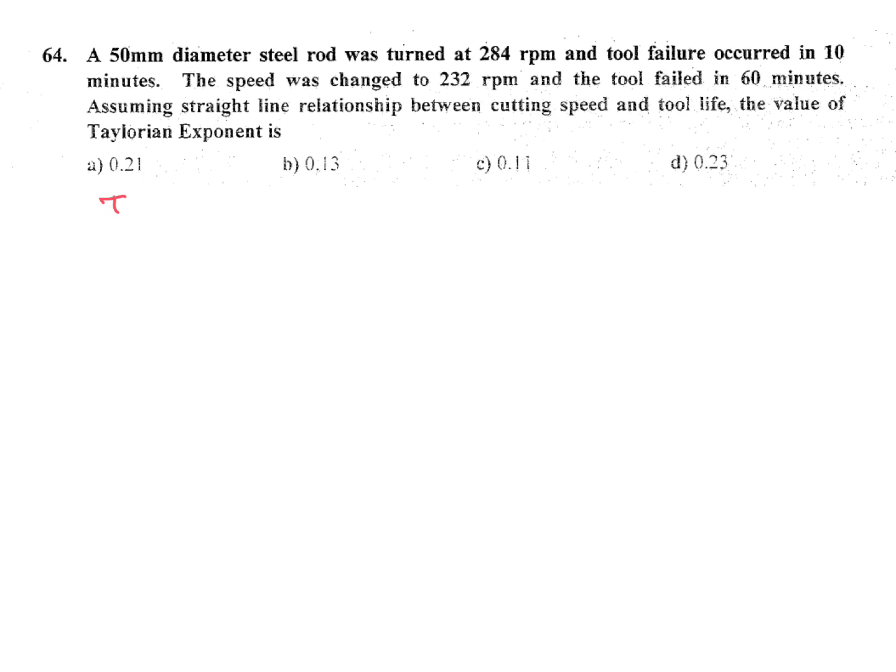Taylor's equation V T to the power n equal to constant, so he asked n. V velocity you can get pi dn in meter per minute, so we can put pi dn1 T1 to the power n equal to pi dn2 T2 to the power n.